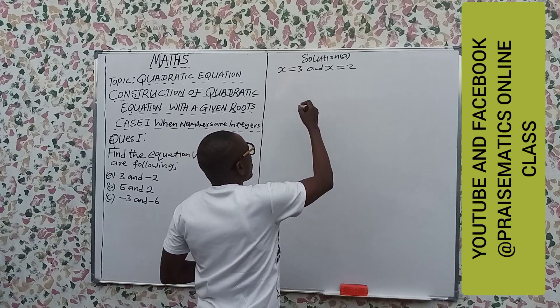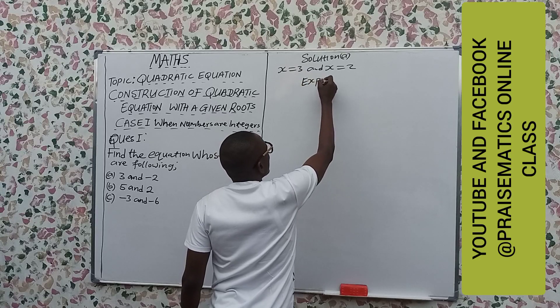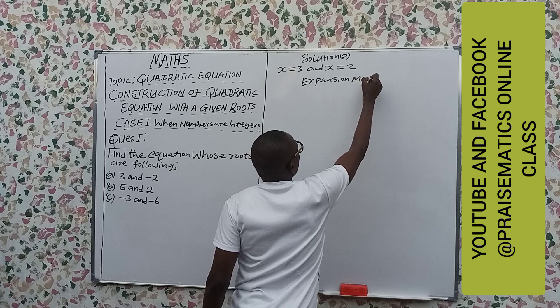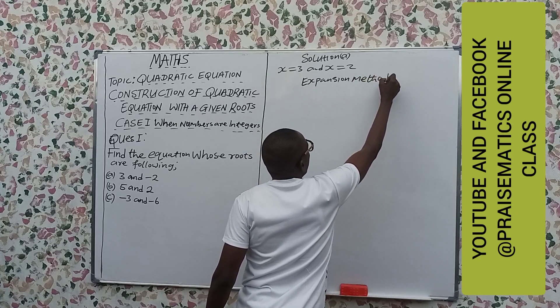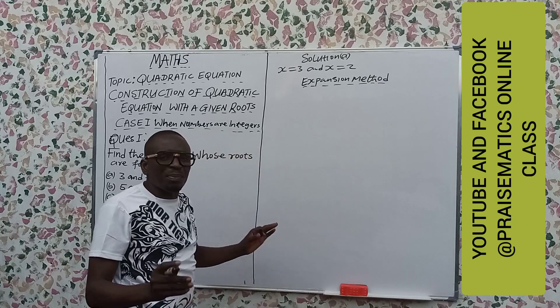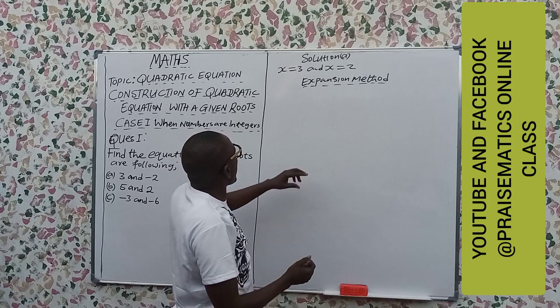How do we do that? We have what we call first method, known as expansion method. Also expansion, and the other method is formula method. We have expansion method and formula method. Let's go with expansion method. What do we do here?